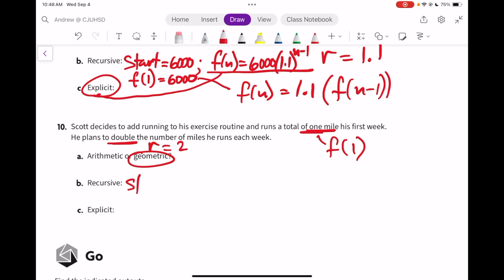The recursive is, let's do this consistently, f(1) is 1. And f(n) equals the previous, 2 times the previous.